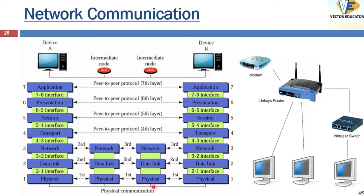The physical layer provides the interface for physical transfer of data — these are the cables. When data travels from the sending device, it moves from layer 7 down to layer 1. It then passes through intermediate switches and routers, where processing occurs up to layer 3. Finally, at the receiver station it moves from the physical layer, layer 1, up to layer 7, and the remaining processing takes place so the person can open up applications, mails, or whatever they need.